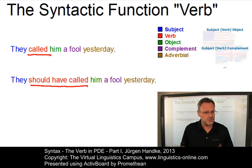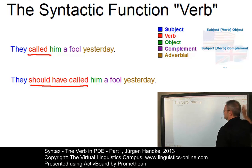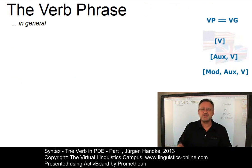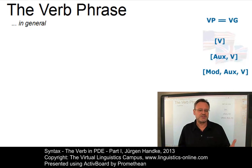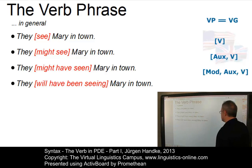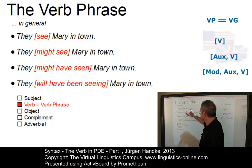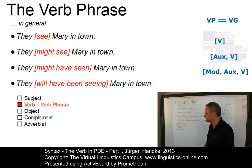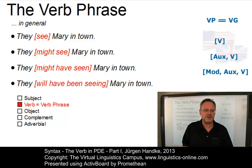Let us now turn our attention to another term: the term verb phrase. Many linguists use the term verb phrase to refer to all those syntactic categories that are component parts of the syntactic function verb. The verb phrases in these examples are identical with the syntactic function verb. So we have the verb phrase see, the verb phrase might see, the verb phrase might have seen, and the verb phrase will have been seen — all identical with the syntactic function.